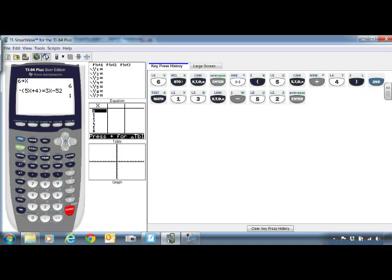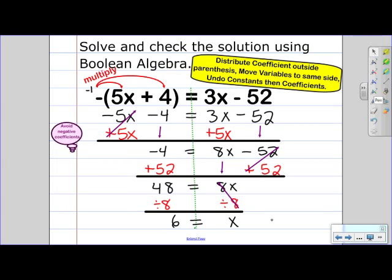So remember, 1 means your solution is correct. 0 means that your solution is incorrect. So based on Boolean algebra, 6 is the correct solution.